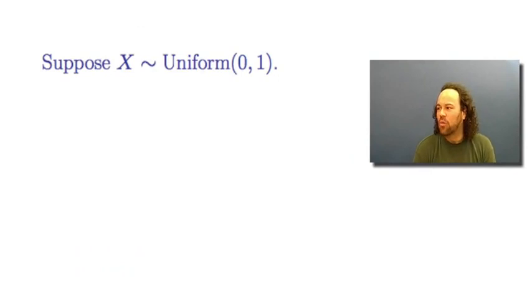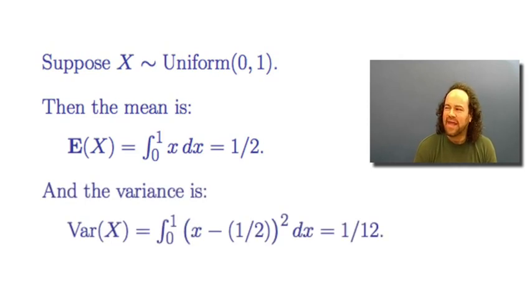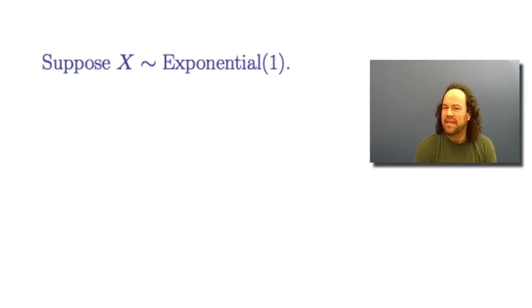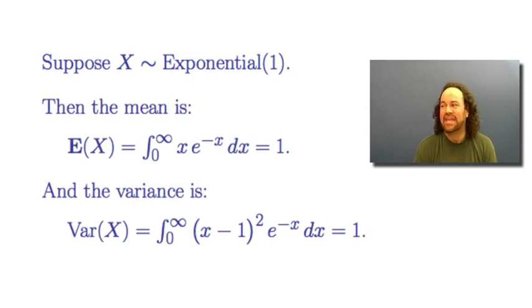Just like discrete distributions, continuous distributions also have a mean and a variance, but computing them requires an integral instead of a sum. For a random variable uniformly distributed on (0,1), the mean is the integral of x dx from 0 to 1, which is 1/2. The variance is the integral of (x - 1/2)² from 0 to 1, which works out to 1/12. For the exponential(1) distribution, the mean is the integral of x·e^(-x) from 0 to infinity, which equals 1, and the variance also equals 1.